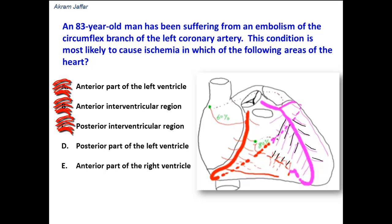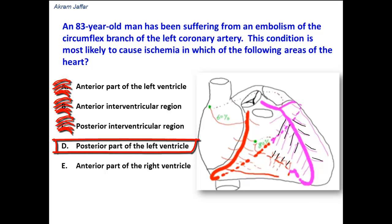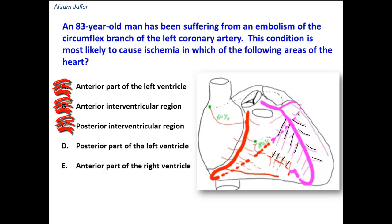However, the question is asking about what is most likely to cause ischemia. There is a possibility with option C, but looking at option D — the posterior part of the left ventricle — yes, the posterior part of the left ventricle is supplied by ventricular branches from the circumflex branch of the left coronary artery.